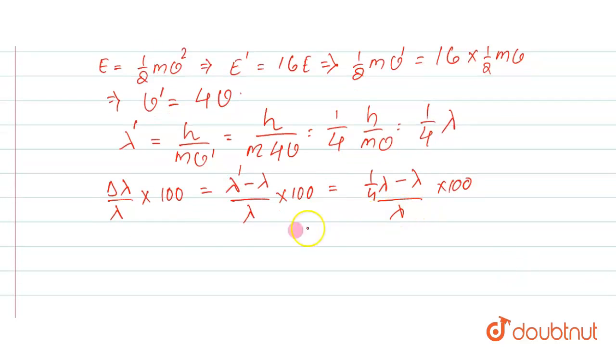So here you can see Δλ by λ multiplied by 100. This will be negative, but negative only means that if your kinetic energy is increasing, then your wavelength will decrease.